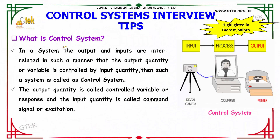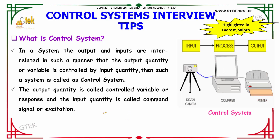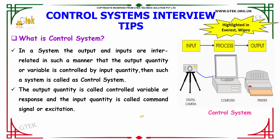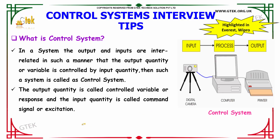The next question: What is a control system? A control system is one in which the output and inputs are interrelated in such a manner that the output quantity or variable is controlled by the input quantity — then such a system is called a control system. The output quantity is called the control variable or response, and the input quantity is called the command signal or excitation.